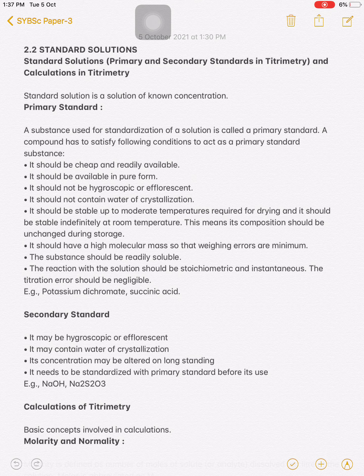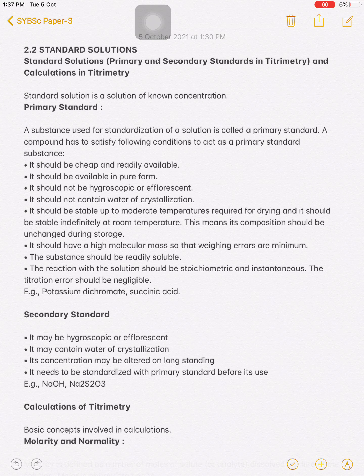A secondary standard may be hygroscopic or efflorescent, may contain water of crystallization, and its concentration may be altered on long standing. It needs to be standardized with a primary standard before its use. Examples of secondary standard substances are NaOH and Na₂S₂O₃ (sodium thiosulfate). When kept open, these compounds are hygroscopic and their concentration may vary. The secondary standard substance must therefore be standardized by use of a primary standard substance before use.